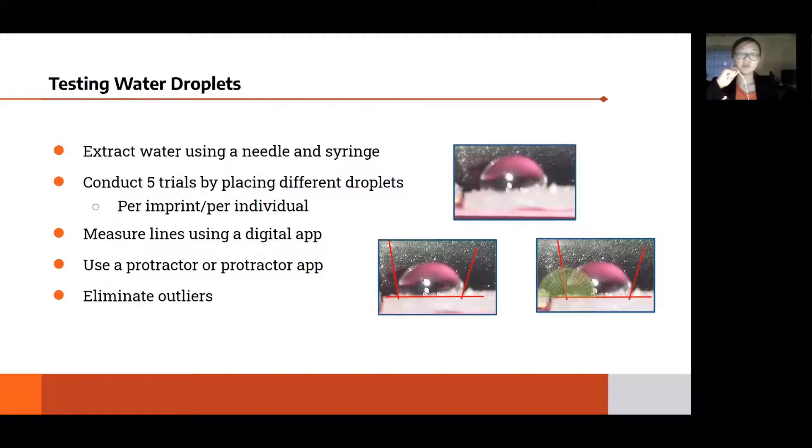Then, we extracted water into a syringe and needle, of which any gauge and volume was used but recorded. Then we conducted 5 trials by placing 5 droplets onto the silicone surface and took pictures of them. With the pictures, we drew lines of the contact angles using a digital app and measured them with protractors.